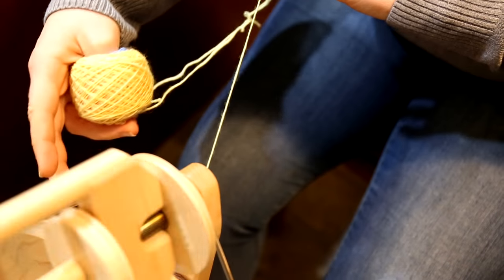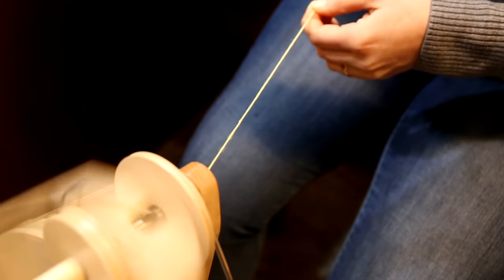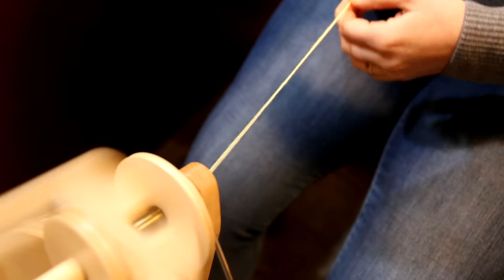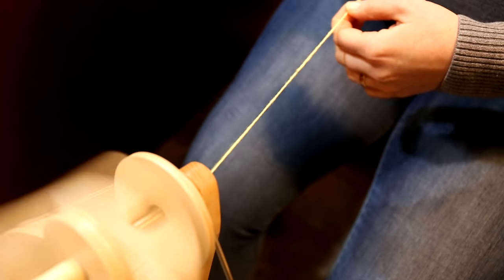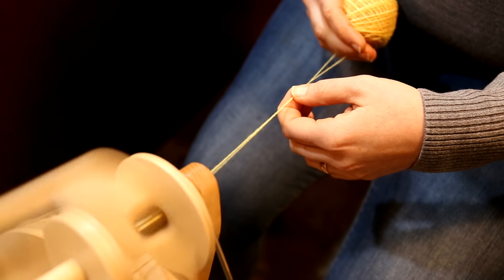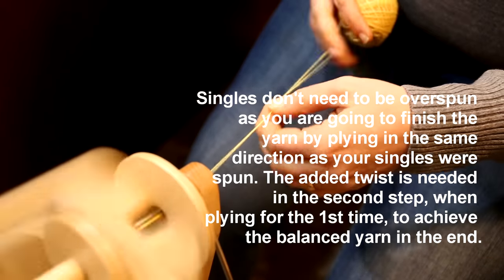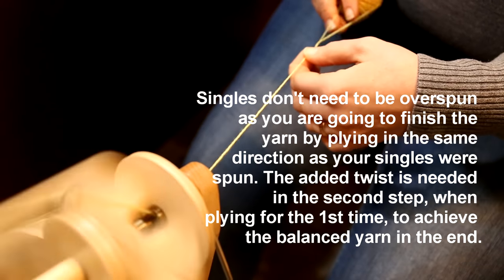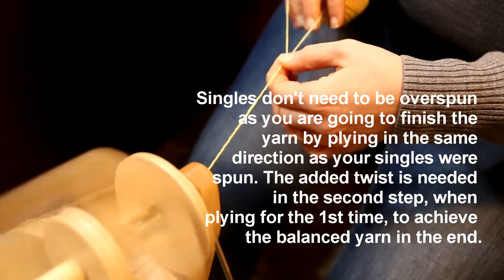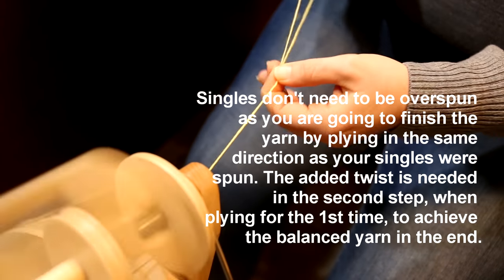Something to think about when you're making your cabled yarns as you're spinning away and plying is all of that twist that you put into your singles that you're now plying all needs to be balanced at the end. So putting all of that extra ply twist is going to be balanced once you ply it back on itself and create your cable.